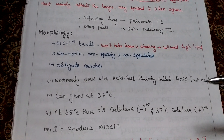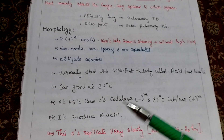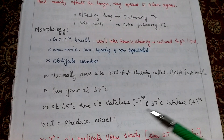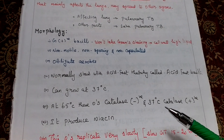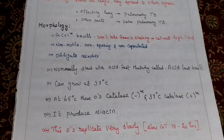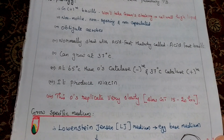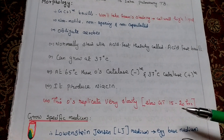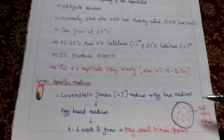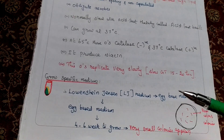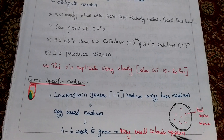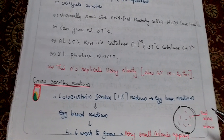This organism can grow at 37 degrees Celsius. At 65 degrees Celsius the organism is catalase-negative, while at 37 degrees Celsius it is catalase-positive. It produces niacin. The organism replicates very slowly — the generation time is 15 to 20 days. It grows on a specific medium called Lowenstein-Jensen (LJ) medium, which is an egg-based medium. It will grow in 4 to 6 weeks, and the colonies have a very small, rough, cream-colored appearance.